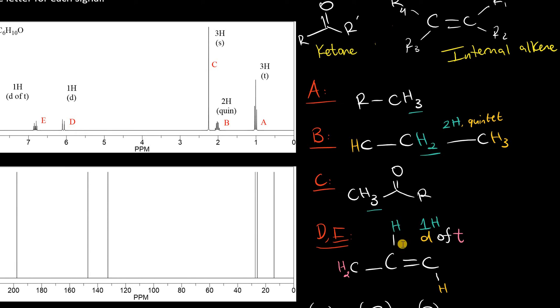So that's where this doublet of triplet comes from. The hydrogen here has an adjacent alkene hydrogen here, that will split this signal into a doublet, and towards the left we have two supposed protons forming a triplet. So a doublet of triplet is a result of these three adjacent hydrogen.